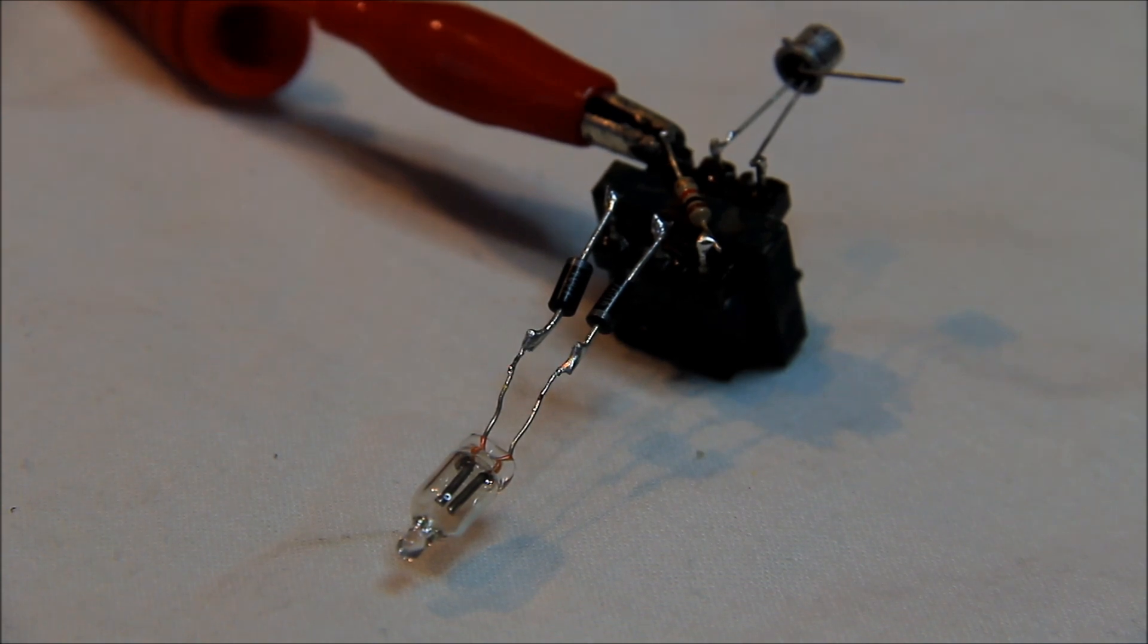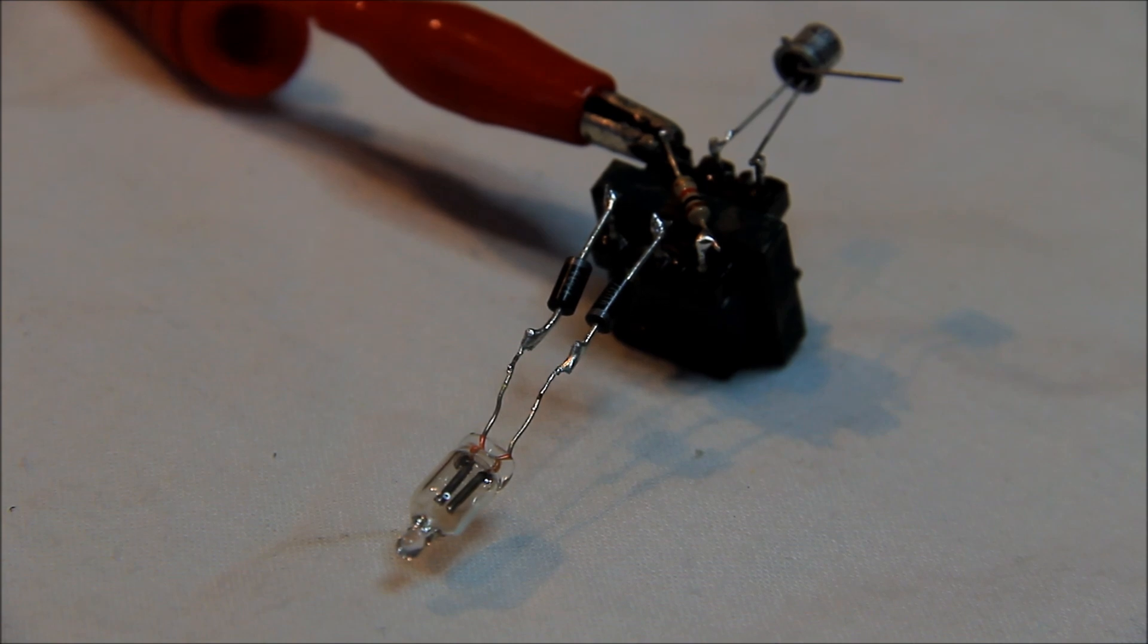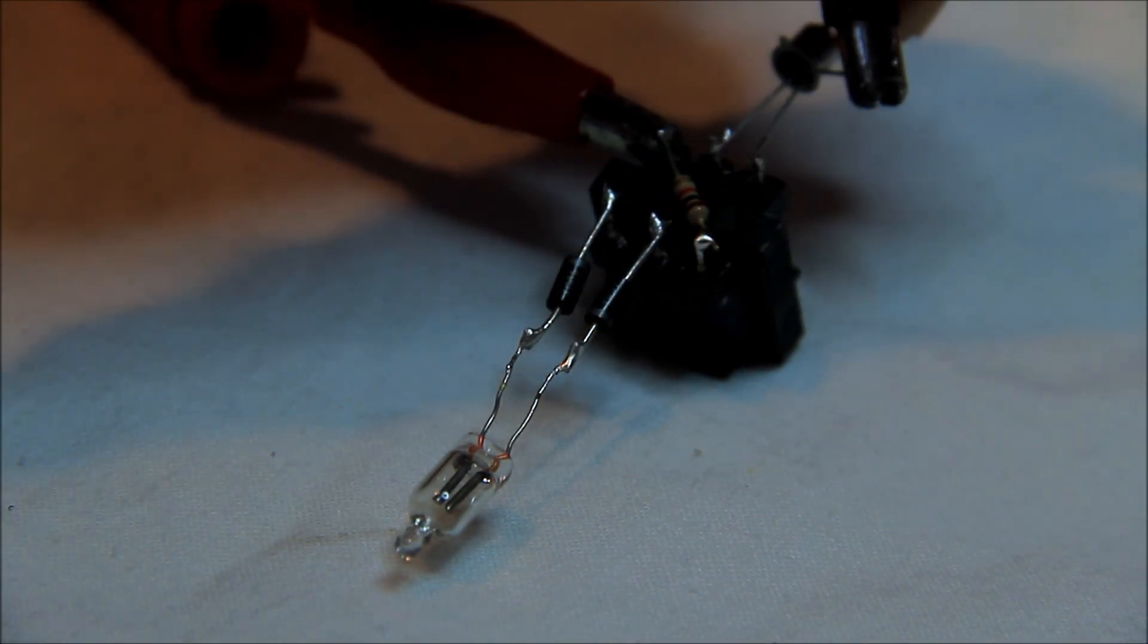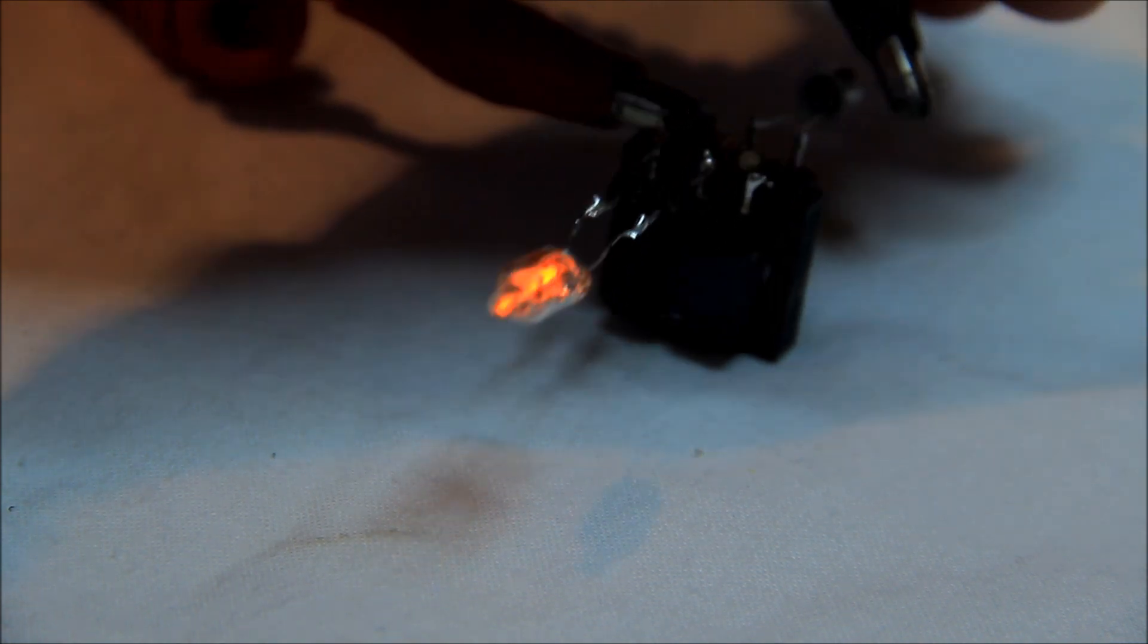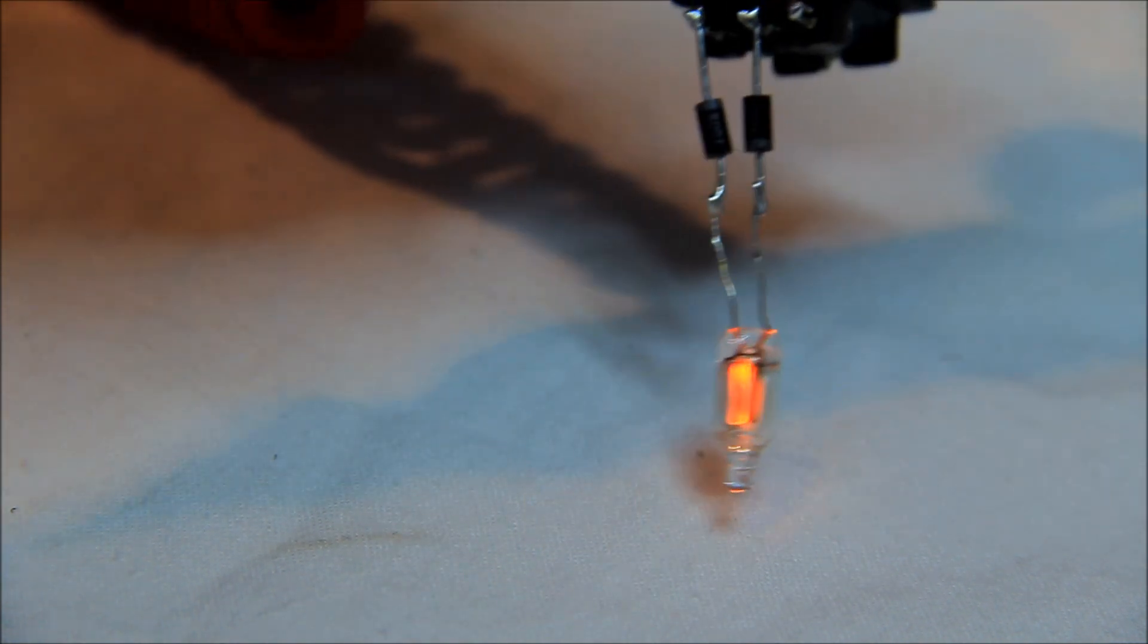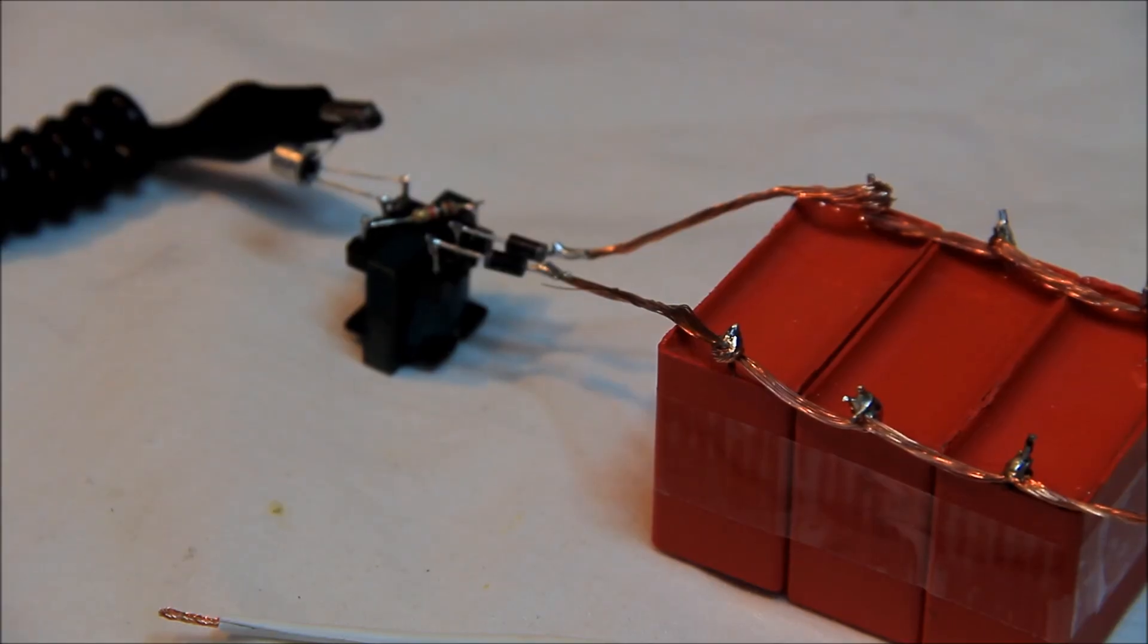Our high voltage circuit is ready and now we need the EMP circuit, but first I will show you that we have high voltage out of this transformer. Here you can see a small neon light bulb light up and it's pretty cool I think.